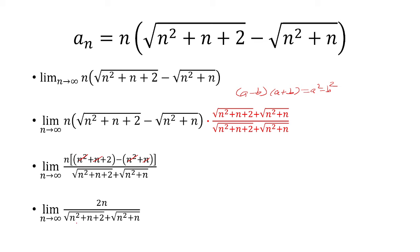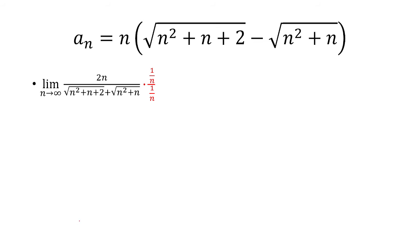So let's divide everything by 1 over n, or multiply by 1 over n. And so when 1 over n goes inside the square root, it's going to be 1 over n squared. So essentially you're just going to take everything inside the square root divided by n squared.